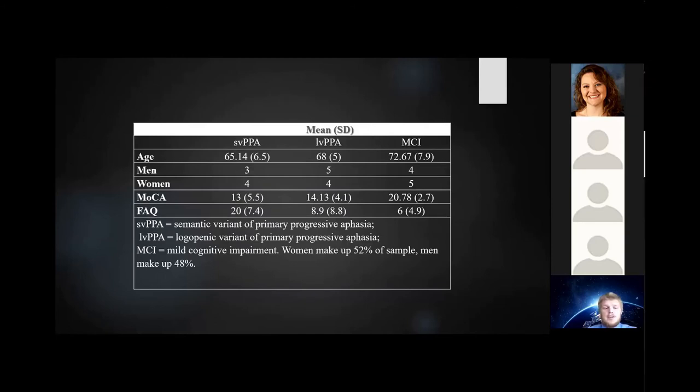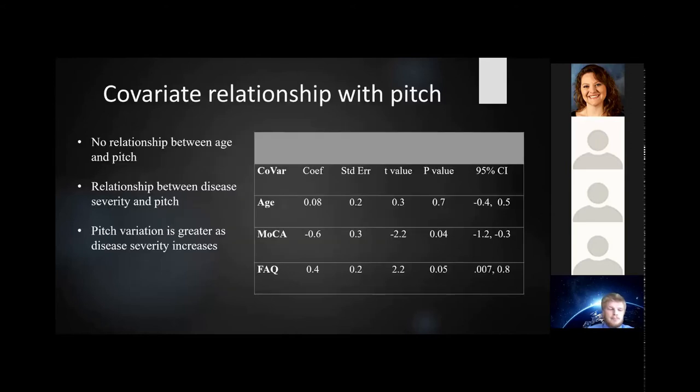When we looked for differences between diagnostic groups, we found that age and disease severity differed between groups. Disease severity included both the MOCA, the Montreal Cognitive Assessment, and the FAQ. We then examined whether there were any relationships between these variables and pitch. There wasn't a relationship between pitch and age. However, there was a relationship between disease severity and pitch variation. So greater disease severity was associated with greater pitch variation.